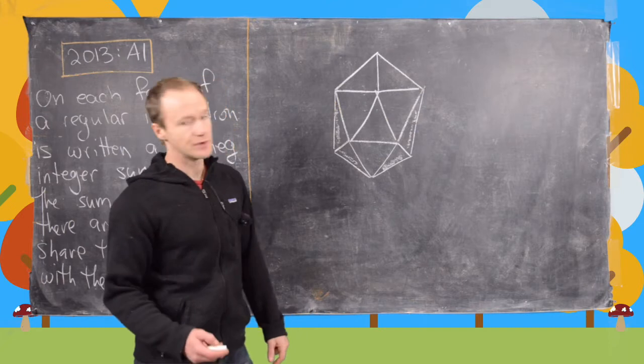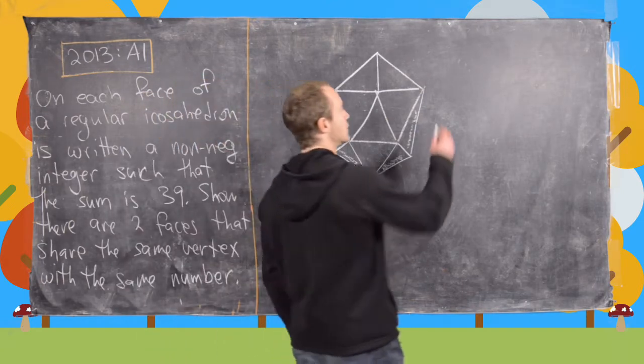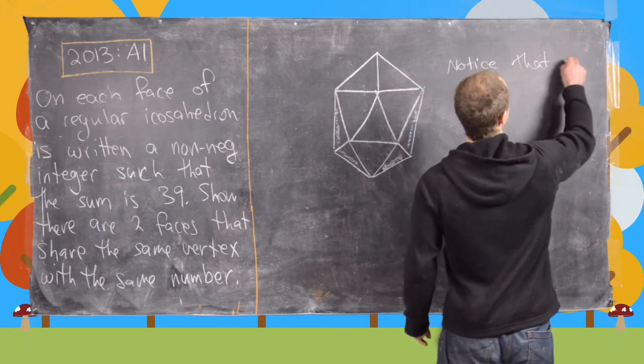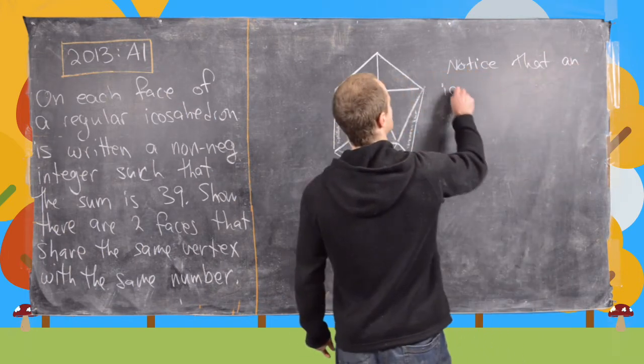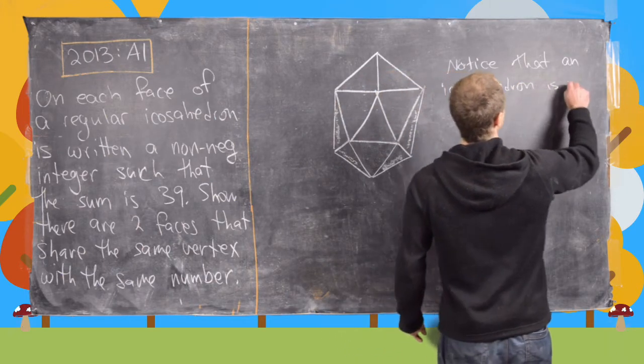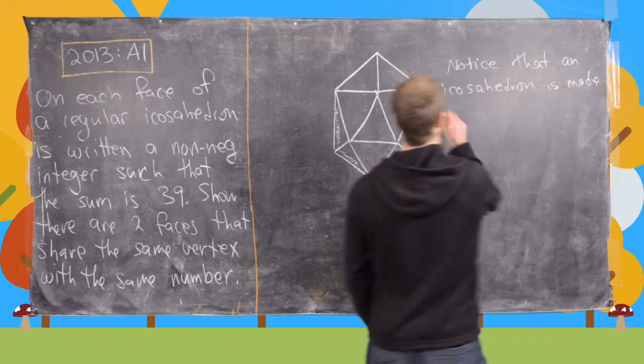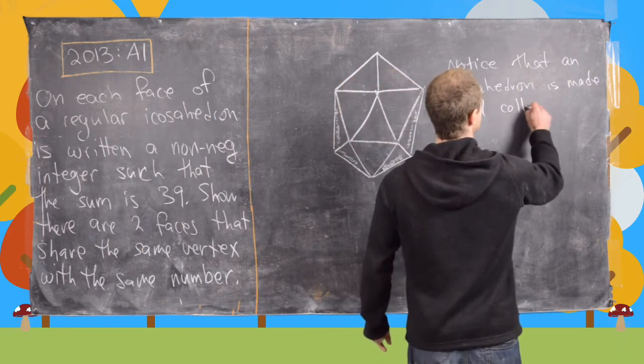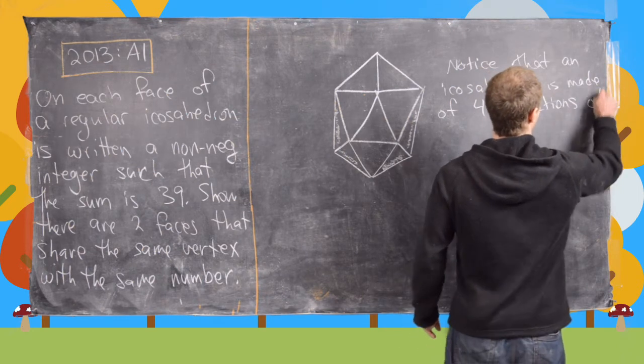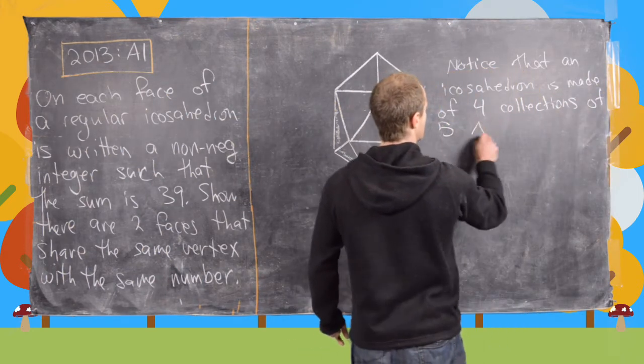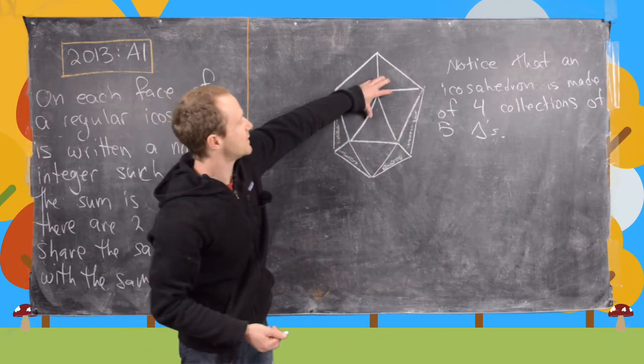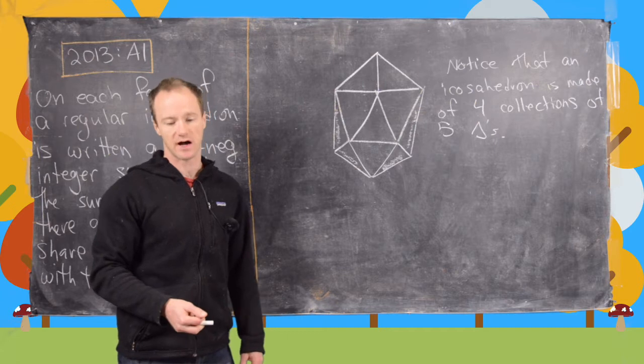So in order to solve this problem, we're going to notice the following. So notice that an icosahedron is made of four collections of five triangles. So for example, this would be one of the four collections of five triangles.